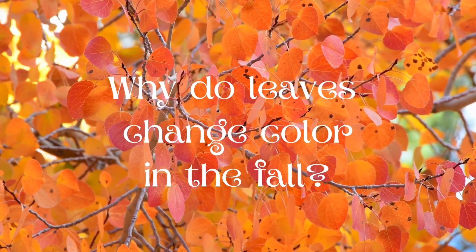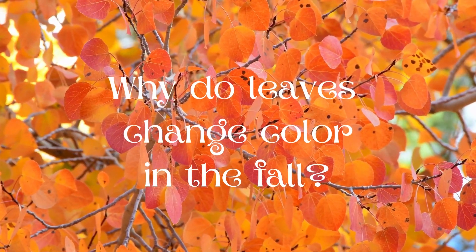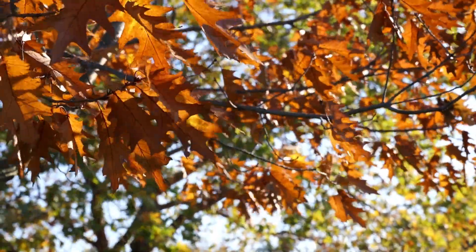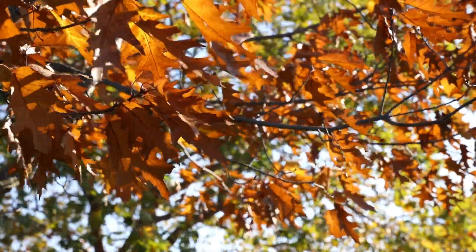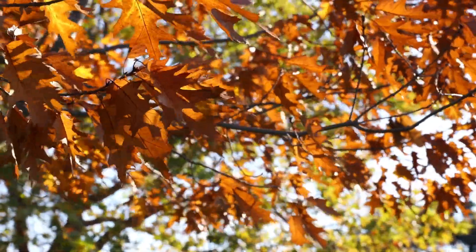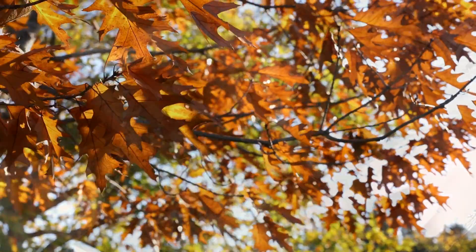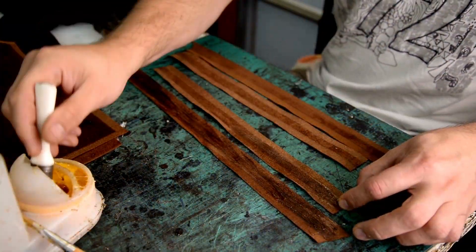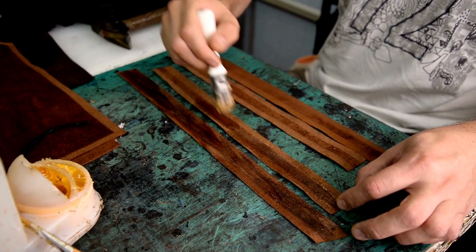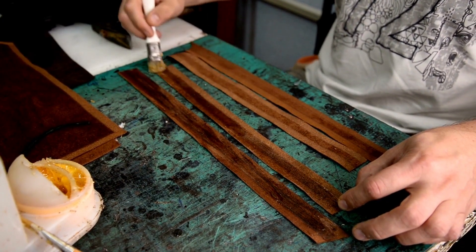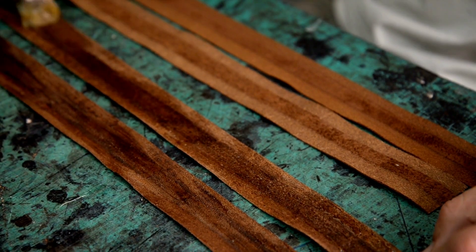Why do leaves change color in the fall? The leaves of several plants generally turn some shade of brown or tan when their cells break down and die. This is similar to the formation of leather when tannins react with animal hides.